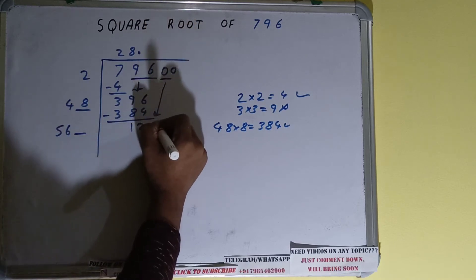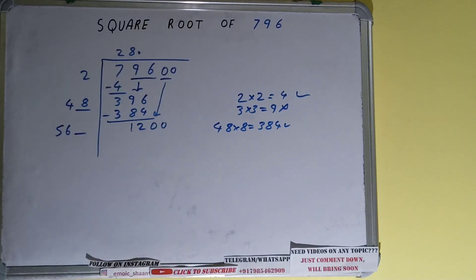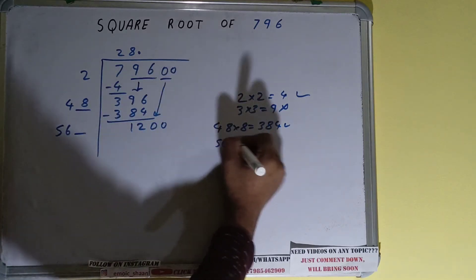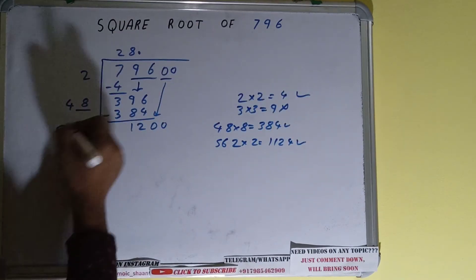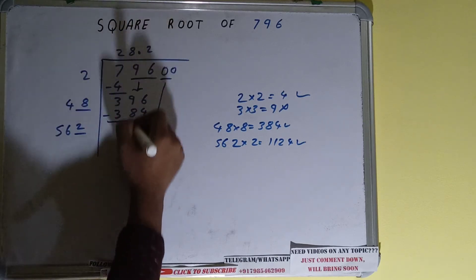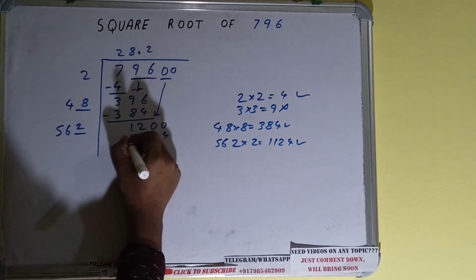The number will become 1200. Now we can try 2 times. So 562 times 2 will be 1124. That is good to take. So 2 here and 2 here. 1124, subtract it.